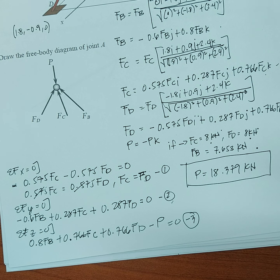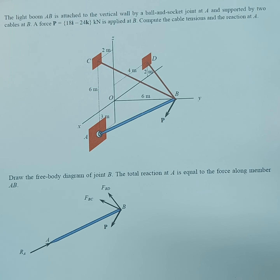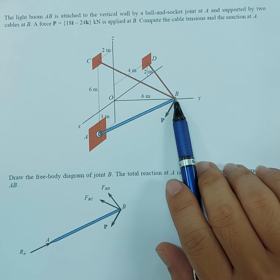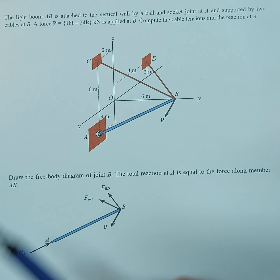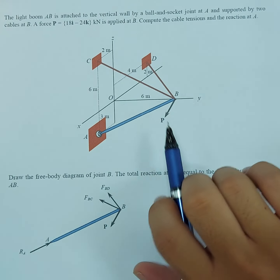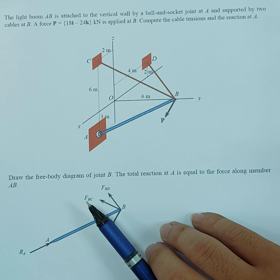Let's proceed to the next example. The light boom AB is attached to the vertical wall by a ball and socket joint at A, and supported by two cables at B. A force P, already in Cartesian vector form, is applied at B. Compute the cable tensions and the reaction at A. The system is in equilibrium, so we apply the equations of equilibrium.